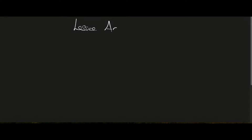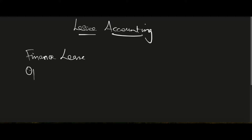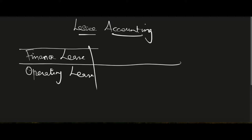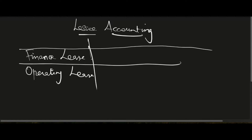Lessee accounting applies to a company which uses an asset on a lease basis. There are two methods: finance lease and operating lease. In a finance lease, the accounting is structured as if the company has borrowed money and bought the asset. In an operating lease, the company is simply paying for the use of the asset, not buying it.